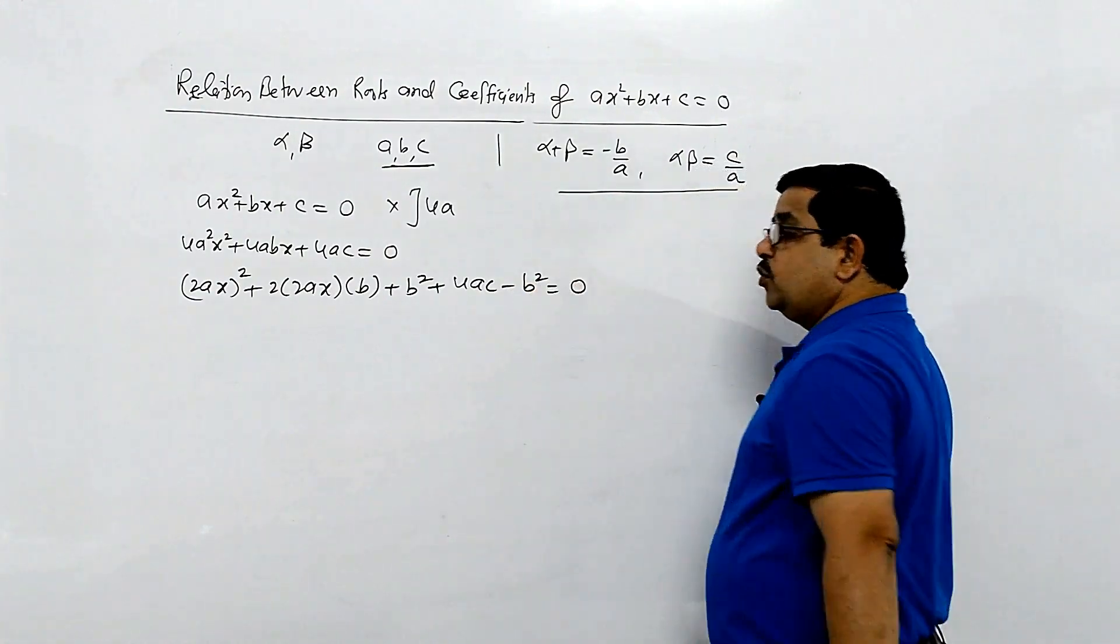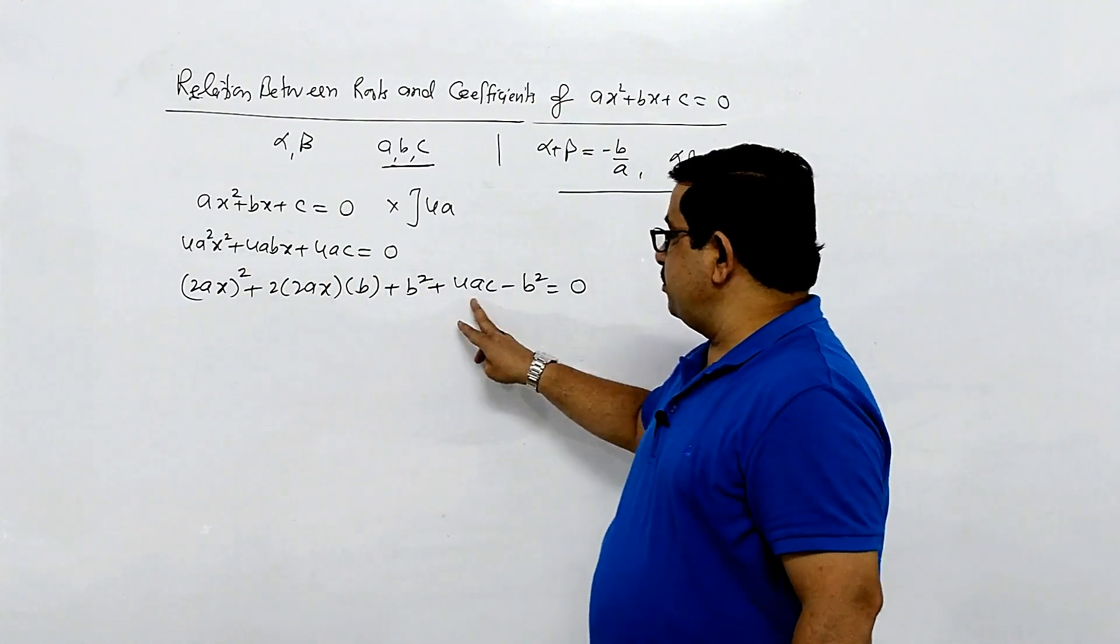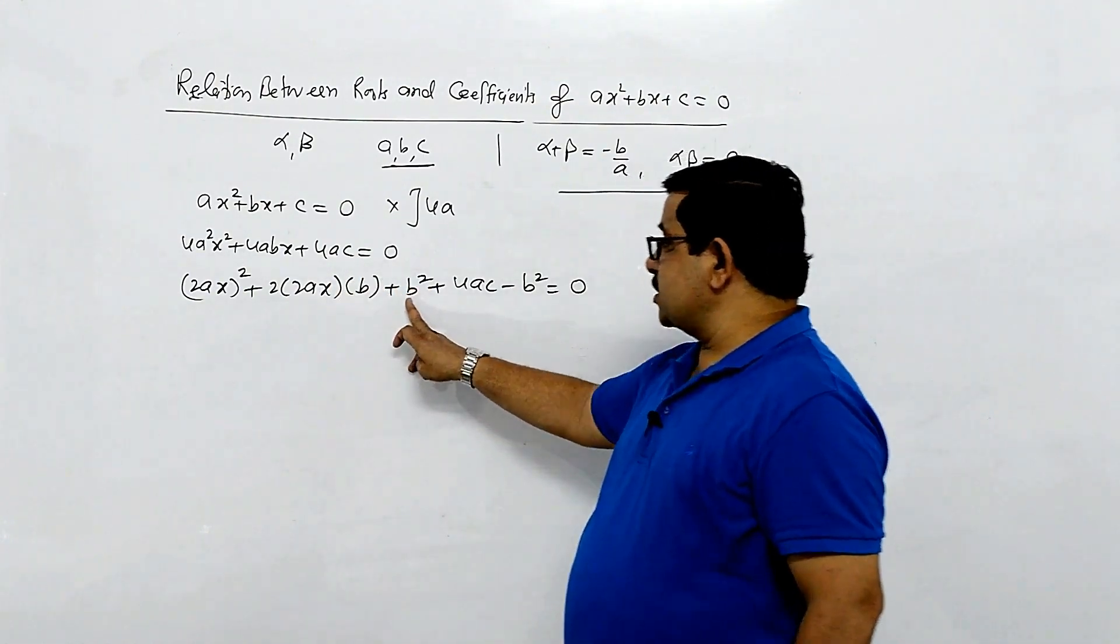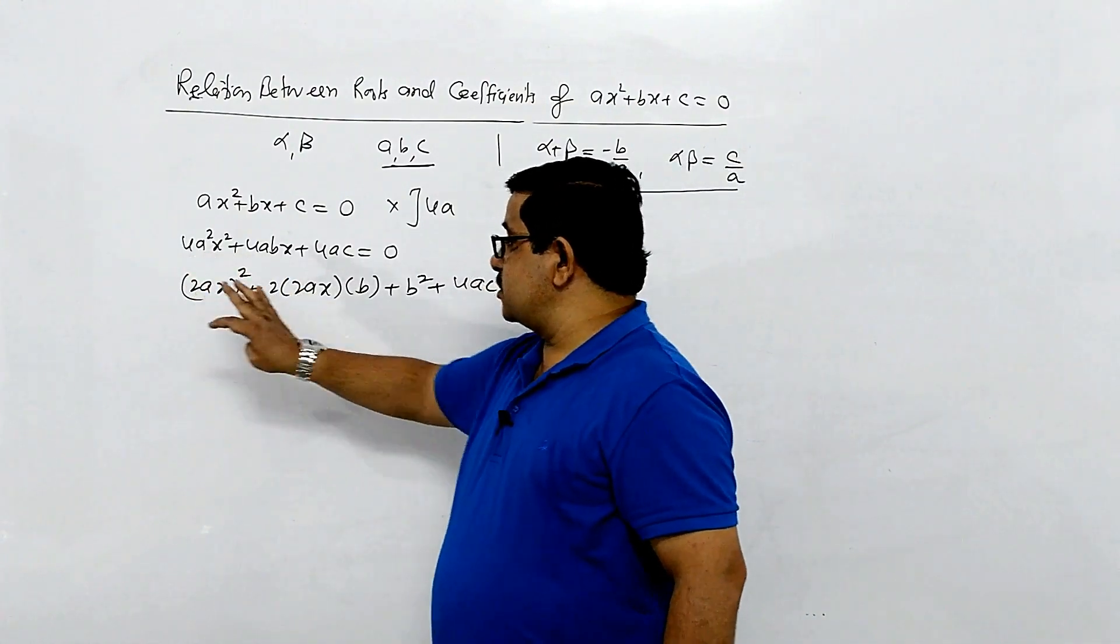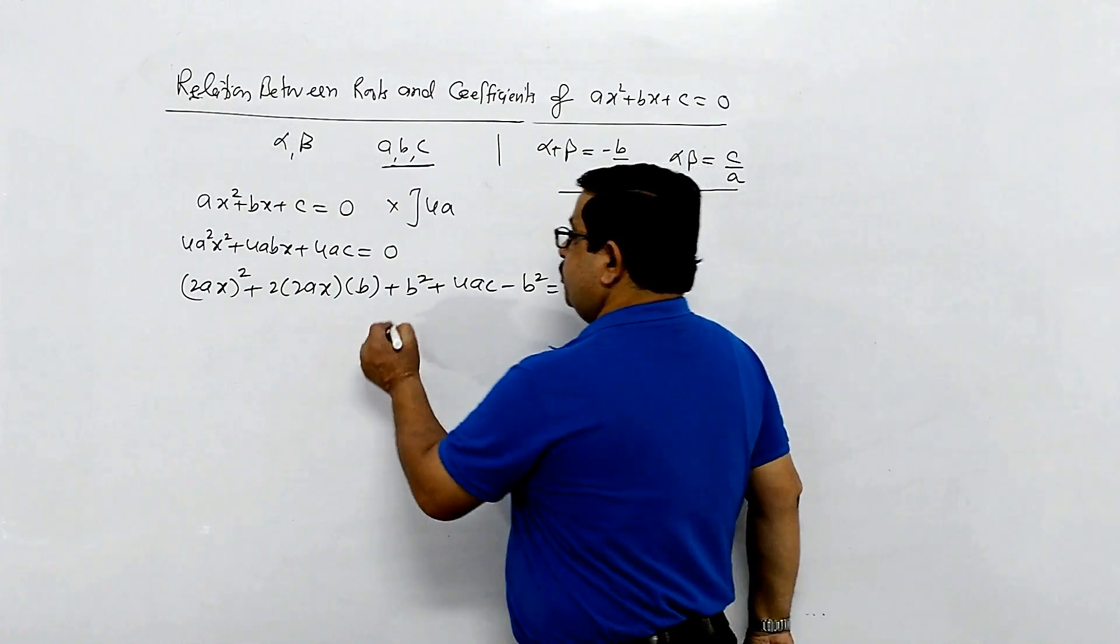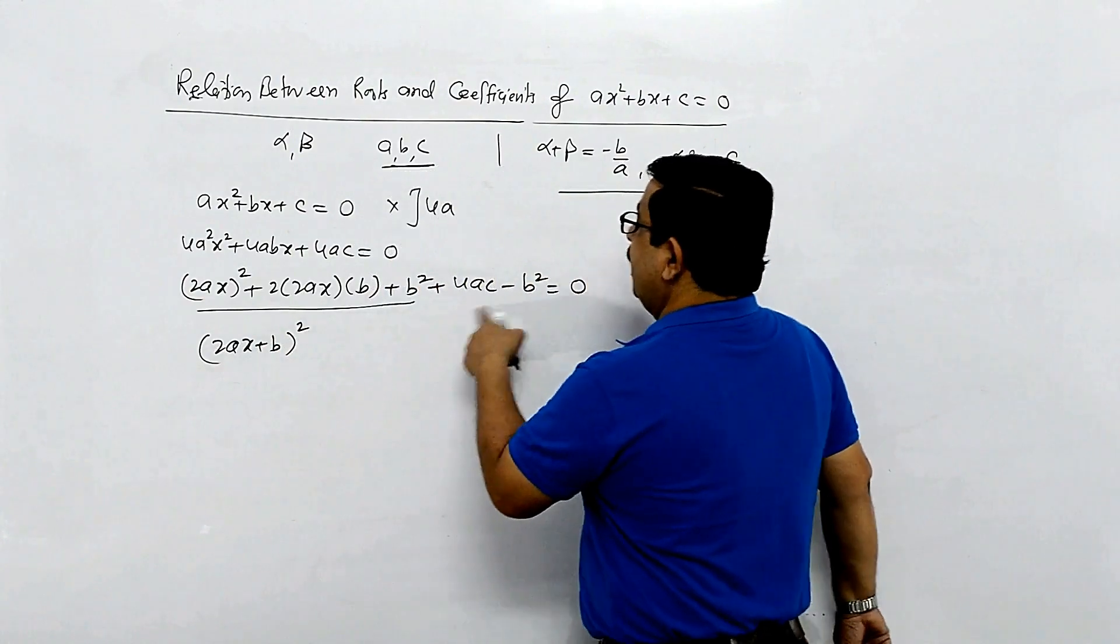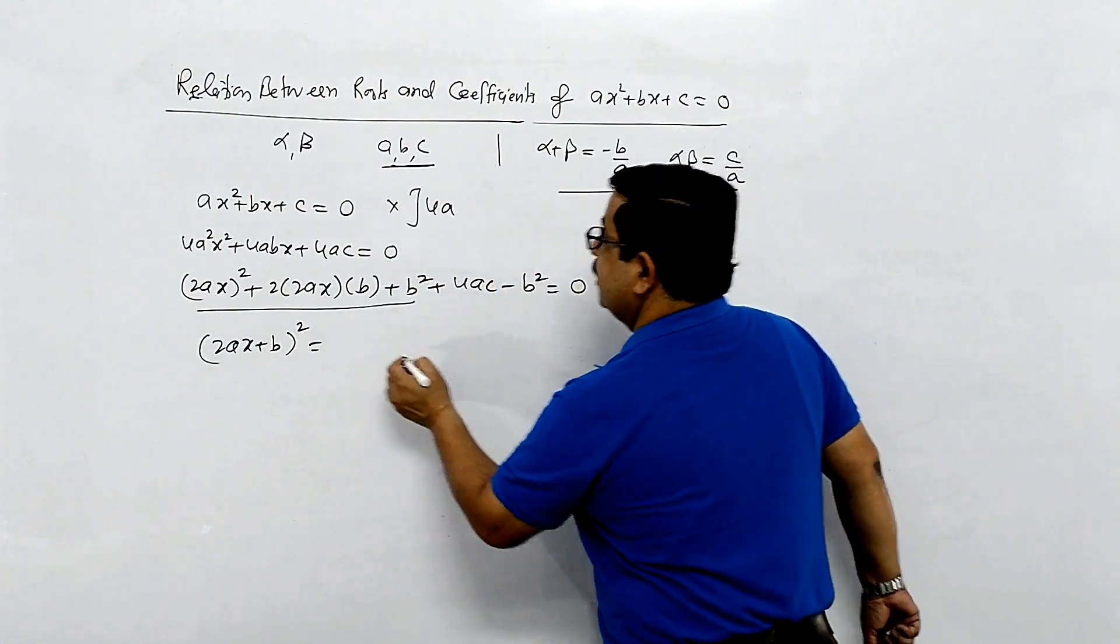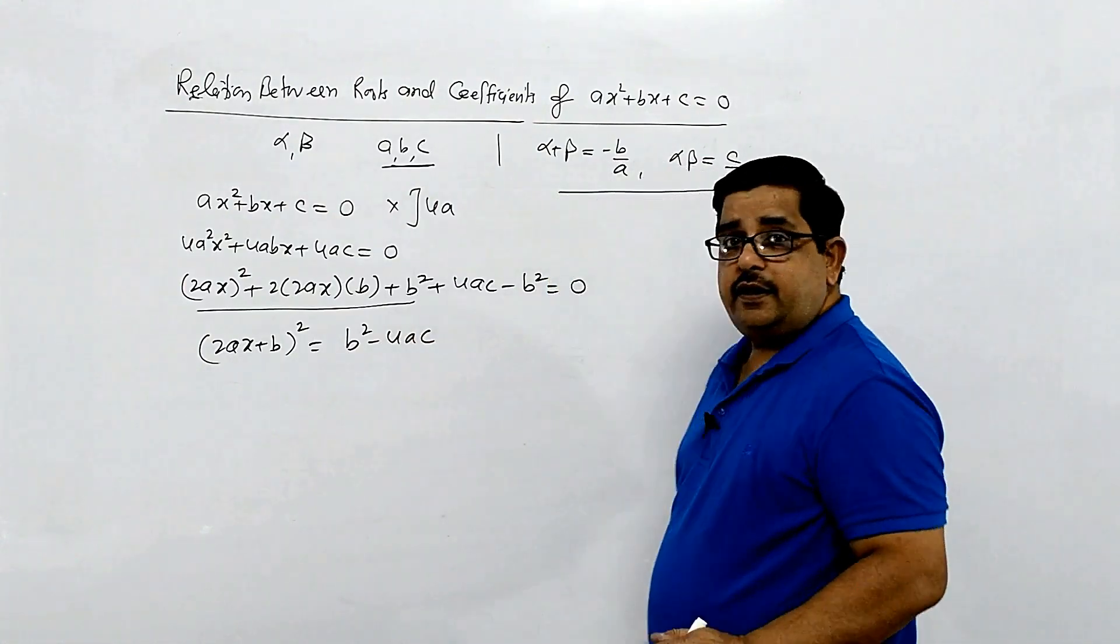We complete the square by adding and subtracting b squared. So we have 4a square x square plus 4abx, and this portion can be written as 2ax plus b whole square. The remaining portion is b square minus 4ac equals zero.